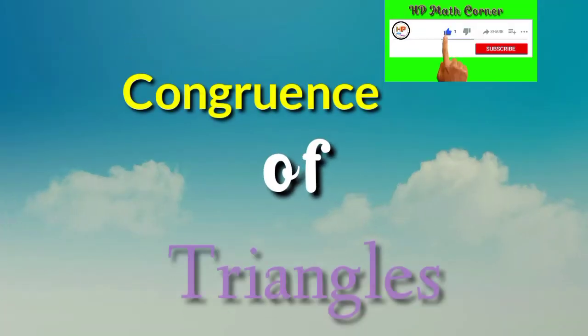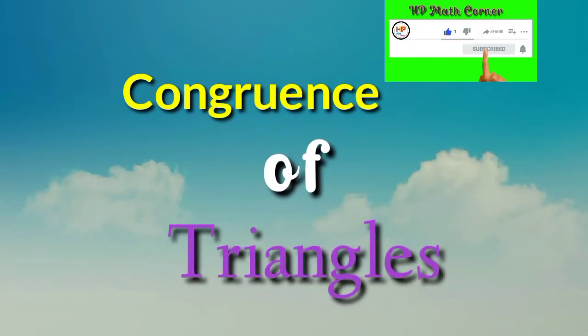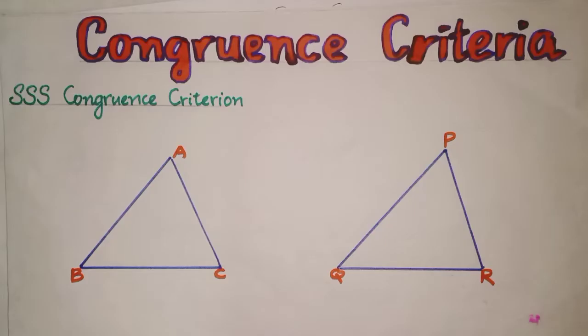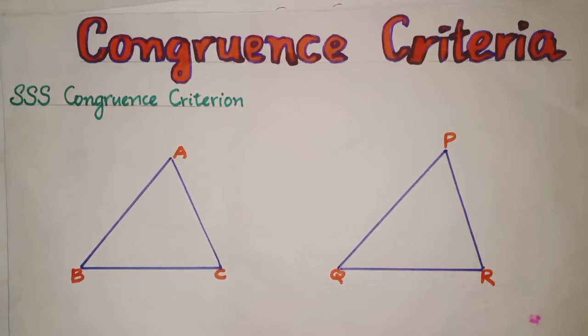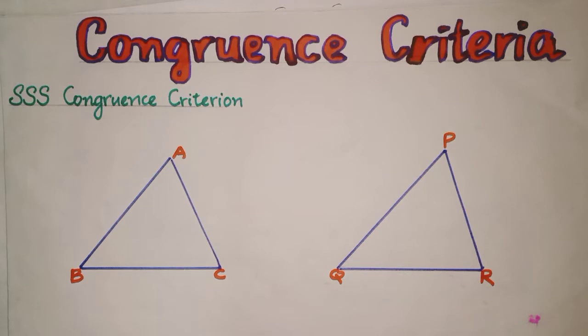Congruence criteria. Criteria means rule. So some rules are therefore for deciding congruency.